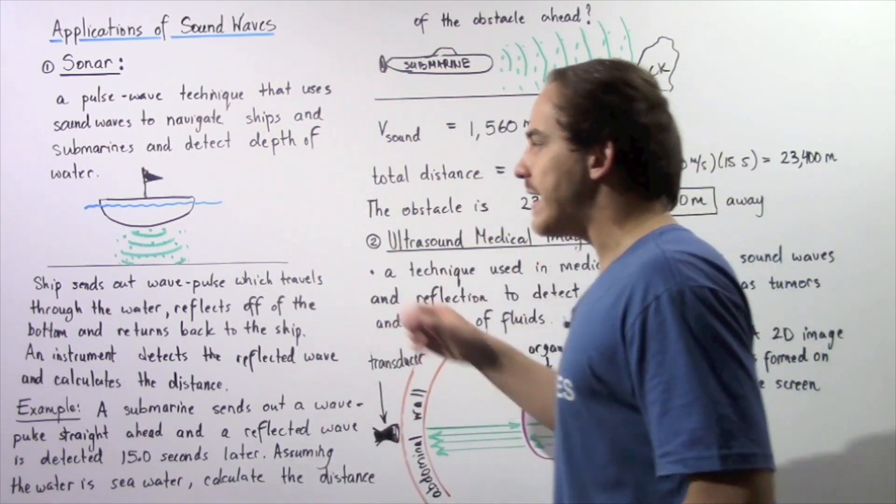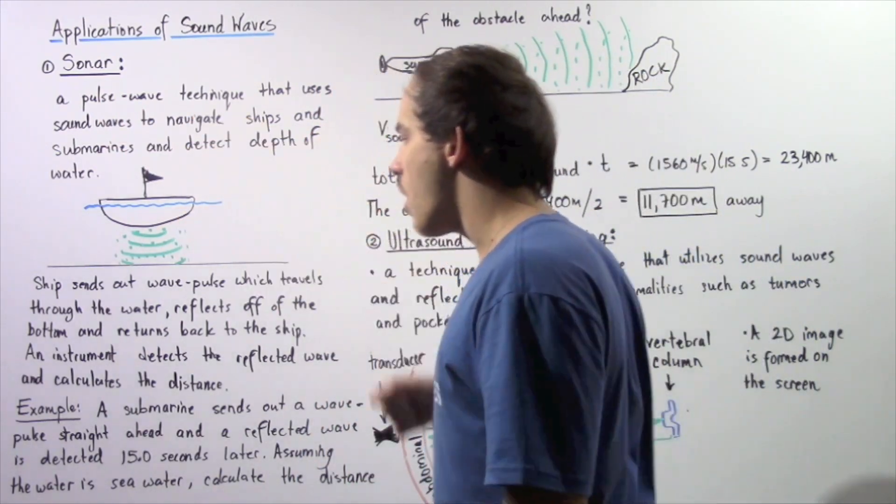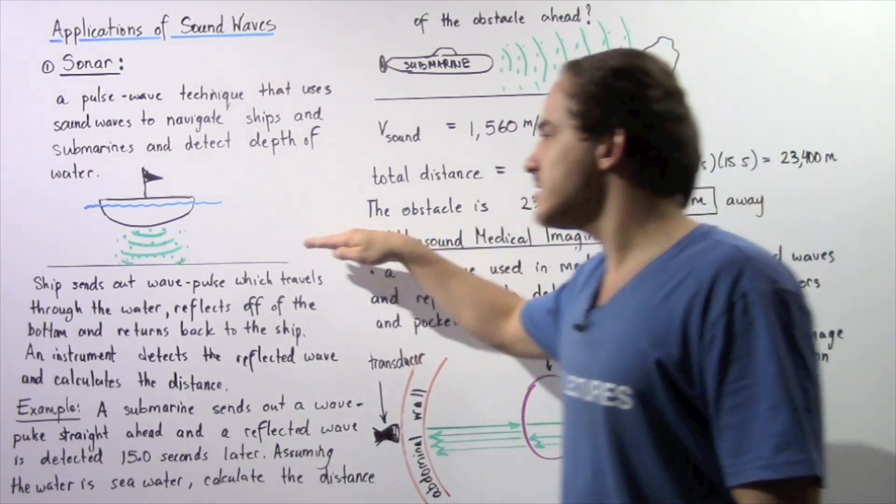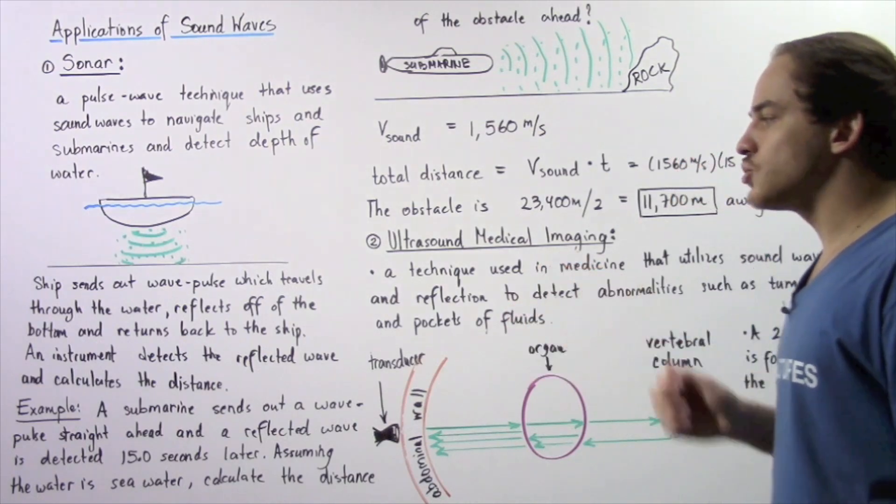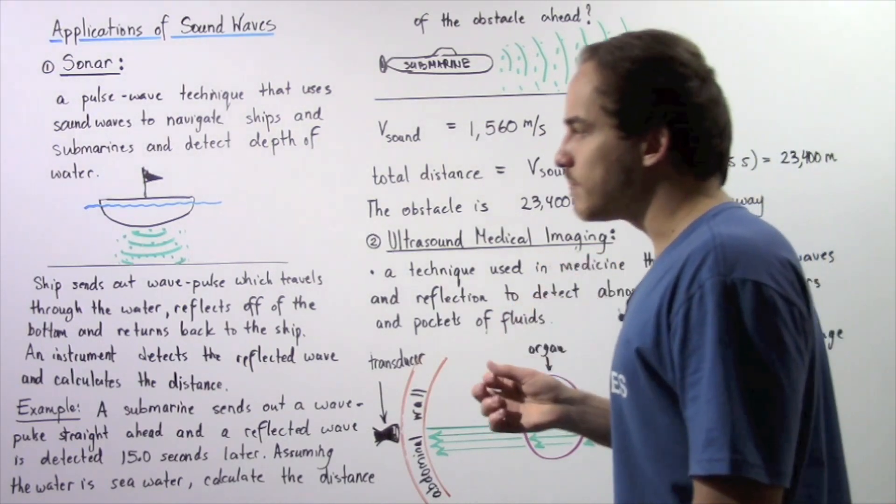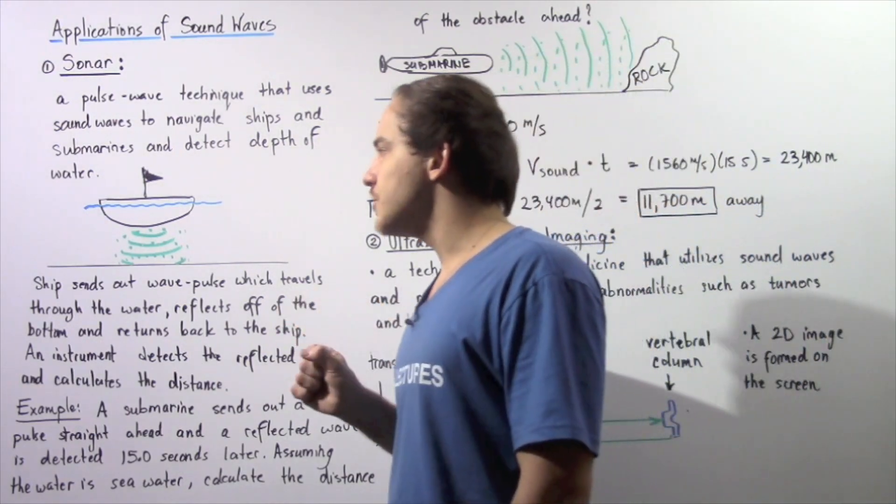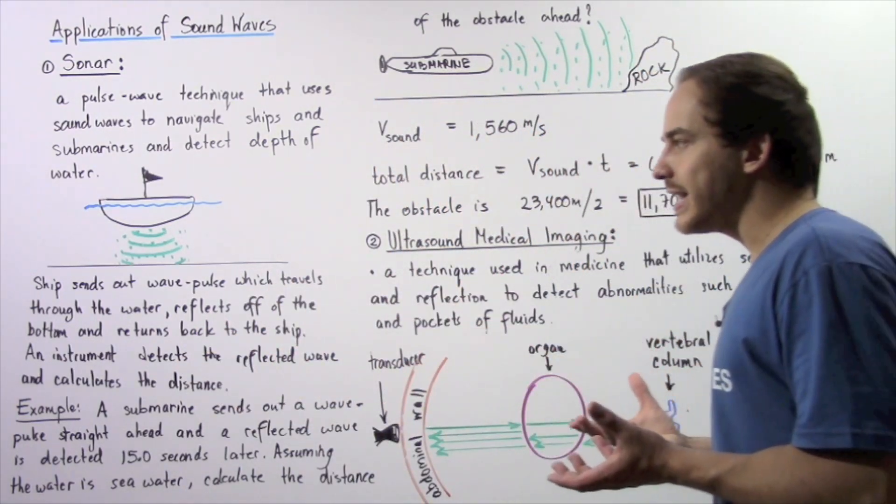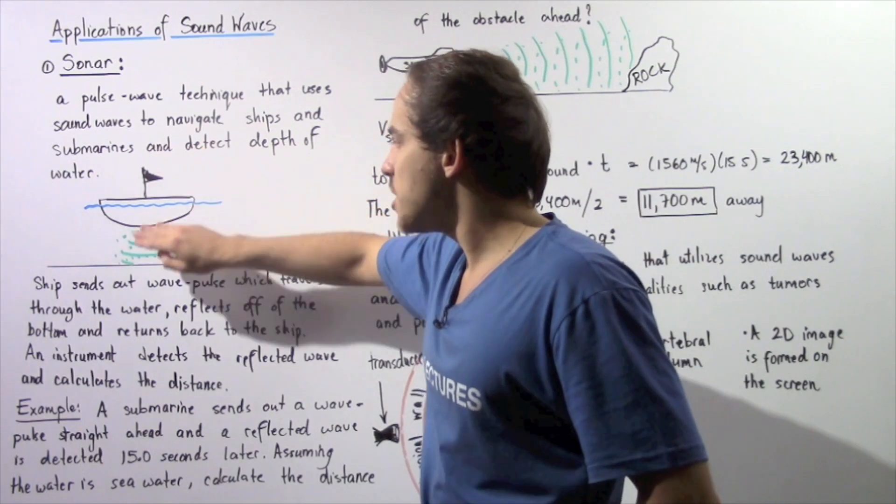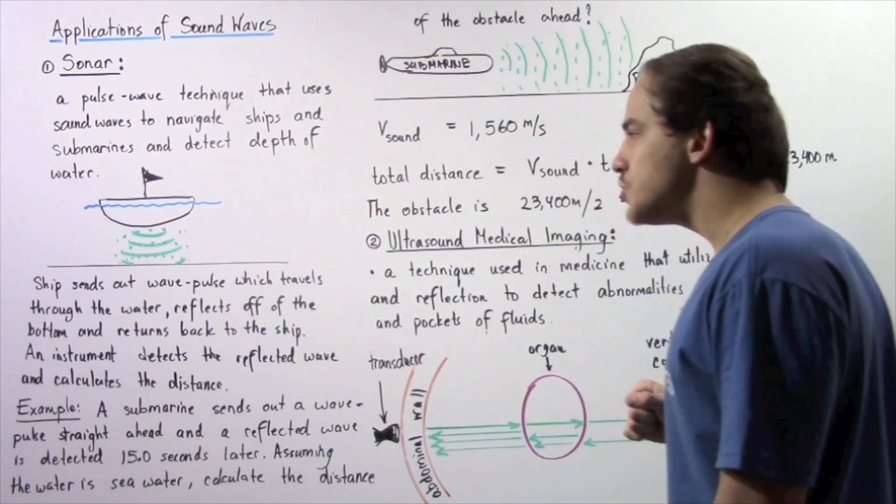The pulse wave travels through the water, reflects off of some object, let's say the bottom of the ocean, and eventually returns back to the ship. A detector found on the ship detects that reflected wave and is able to calculate the distance from the ship to the bottom of the ocean.